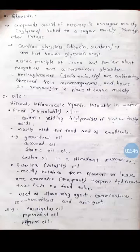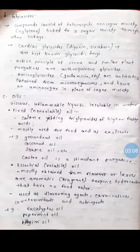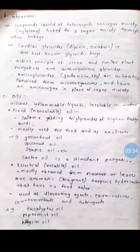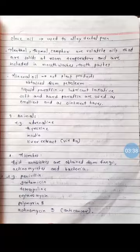The third plant source category is oils. Oils are viscous, inflammable liquids which are insoluble in water. Fixed oils, also called non-volatile oils, are calorie-yielding triglycerides of higher fatty acids, mostly used for food and as emollients — examples include groundnut oil, coconut oil, sesame oil, and castor oil. Essential or volatile oils are mostly obtained from flowers or leaves; they are aromatic terpene hydrocarbons with no food value, used as flavoring agents, counter-irritants, and astringents — examples include eucalyptus oil, peppermint oil, and clove oil, which is used to alleviate dental pain.